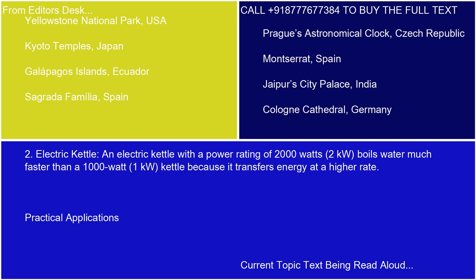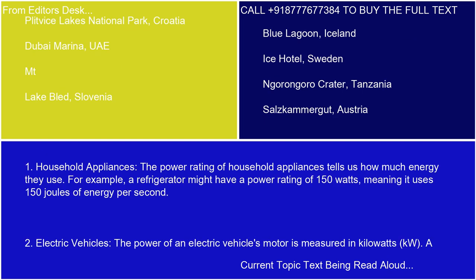Practical applications: household appliances. The power rating of household appliances tells us how much energy they use. For example, a refrigerator might have a power rating of 150 watts, meaning it uses 150 joules of energy per second.